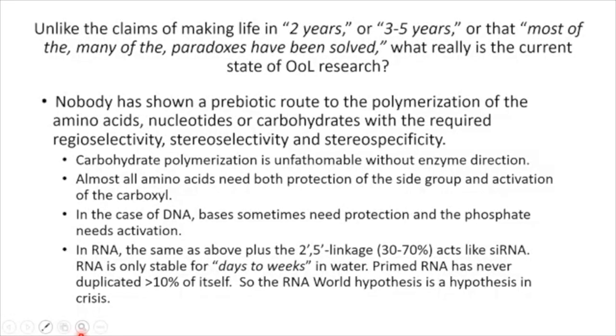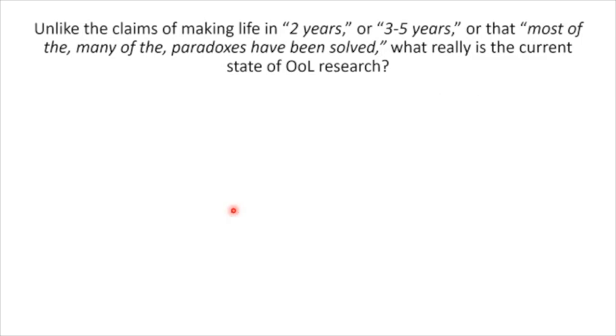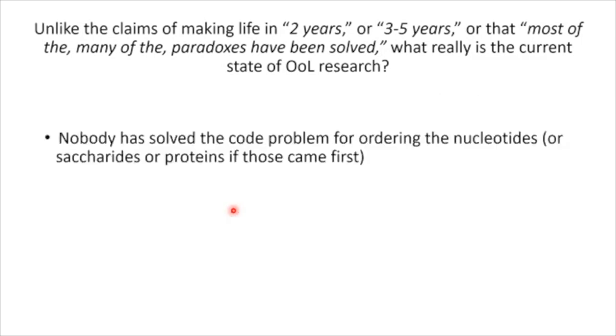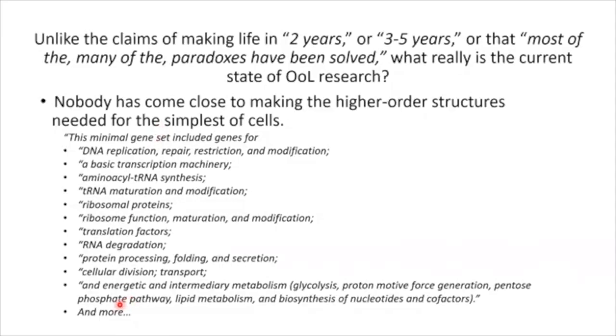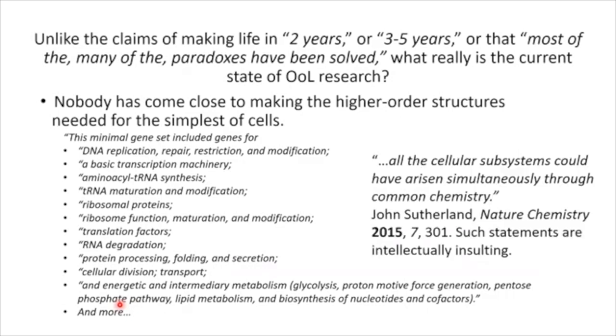Little bits of things can be delivered, but they're all mixed in with other things. You can't do chemistry on vast mixtures because they gum up the works. Nobody has shown prebiotic routes to polymerization of amino acids, nucleotides, or carbohydrates with the required specificities. Carbohydrate polymerization is unfathomably hard. Almost all amino acids need protection. DNA bases sometimes need protection, and you have the 2′–5′ problem. Nobody has solved the code problem for ordering the nucleotides. Nobody has come close to making the higher order structures needed in a cell. And John Sutherland had the audacity to write in Nature Chemistry that all cellular subsystems could have arisen simultaneously through common chemistry.